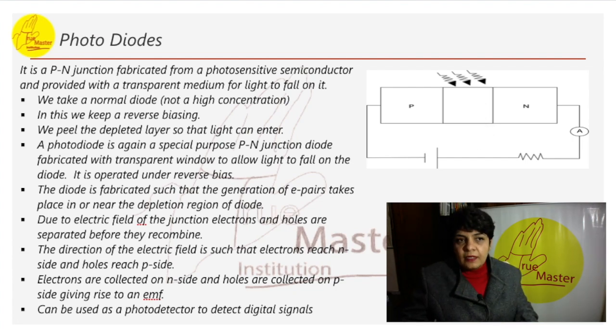The diode is constructed in such a way that the generation of E pair takes place in or near the region of diodes. Electrons which are minority in P - majority is always holes in the P - so minority in P reaches the N side and holes that are minority in the N reaches the P side.